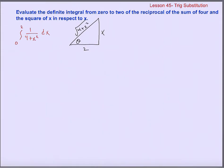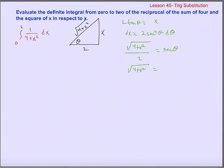We can use whatever trig ratios we need. The tangent of theta equals x over 2, so x equals 2 tangent theta, which means dx equals 2 secant squared theta d-theta, because the derivative of tangent is secant squared. We also need to find something to substitute for 4 plus x squared. The square root of 4 plus x squared over 2 equals secant of theta, which means the square root of 4 plus x squared by itself equals 2 secant theta.